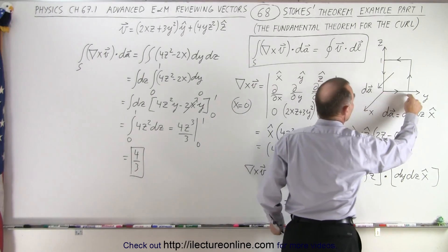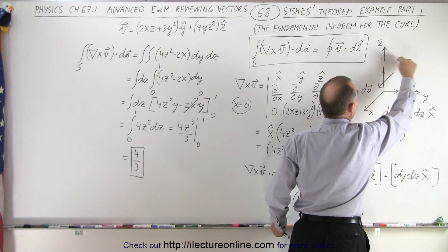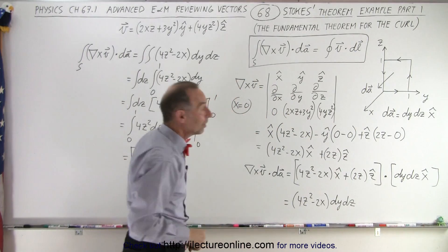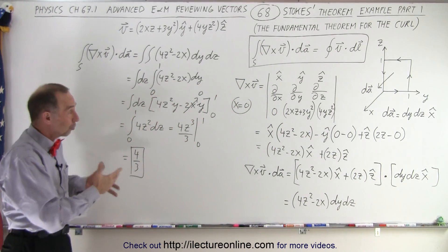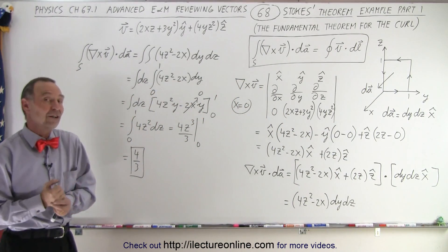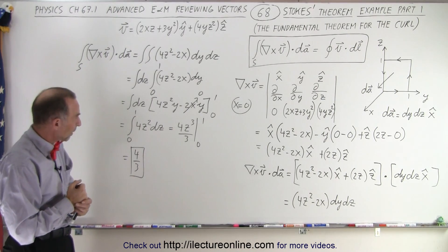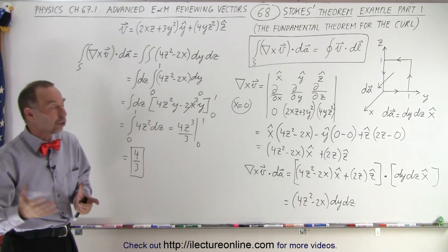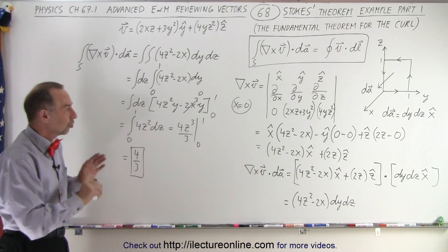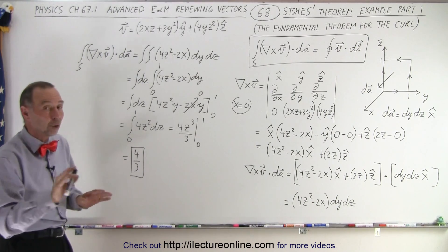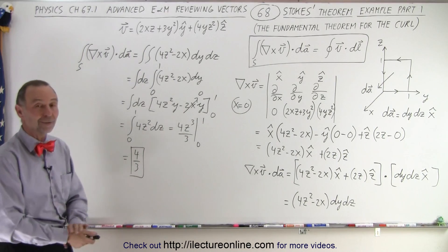The left side of Stokes' theorem equals 4/3. That means the right side should also equal 4/3 when we integrate along the edge — all the way around the four paths. We'll do one more video — Part 2 — to do the right side of this equation and show that it also equals 4/3, confirming that Stokes' theorem actually works.